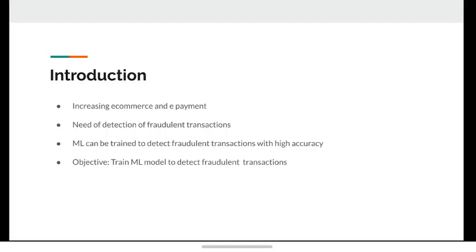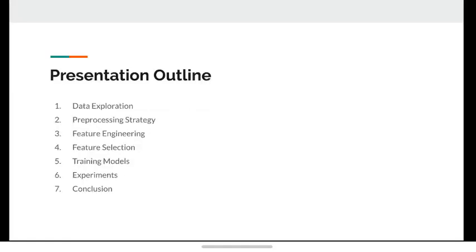The objective of this project is to train an ML model to detect fraudulent transactions accurately. This presentation will be split into seven parts: Data Exploration, Pre-processing Strategy, Feature Engineering, Feature Selection, Training Models, Experiment, and Conclusion.